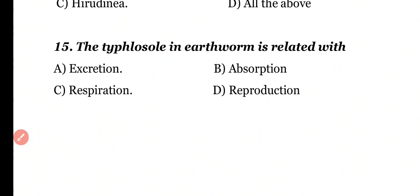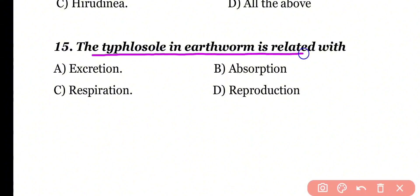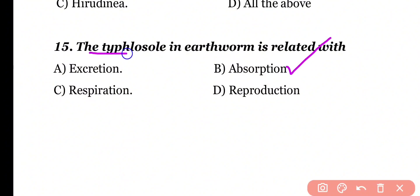Question number 15. Typhlosole in earthworm is related with: excretion, absorption, respiration, or reproduction. Correct answer is option B. Typhlosole is actually a flap present in the intestine and helps to increase the surface area of the intestine for more absorption.